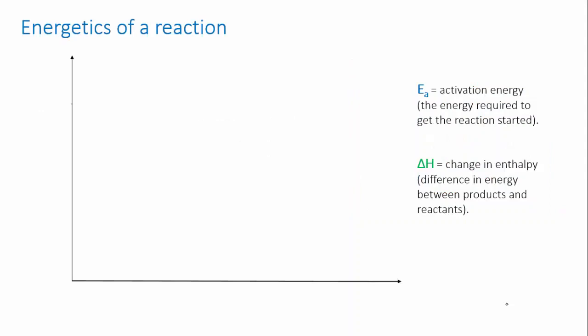We need a little revision on the energy changes that occur during a reaction, so we're going to draw an energy diagram. The vertical axis here is energy. The horizontal axis represents the progress of the reaction, or time if you like.